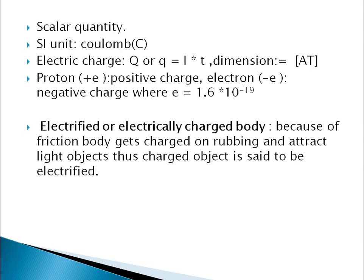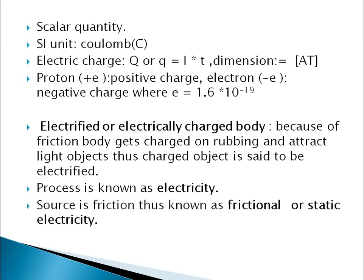When we rub two bodies together, the bodies will get charged and they attract light objects. Thus, these charged objects are said to be electrified. This process is known as electricity. As the source is friction, it's known as frictional or static electricity.